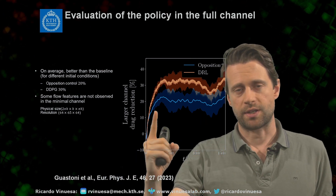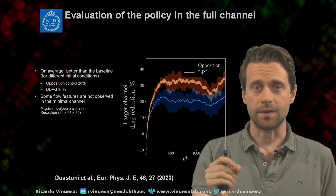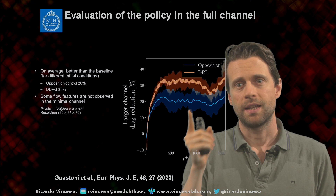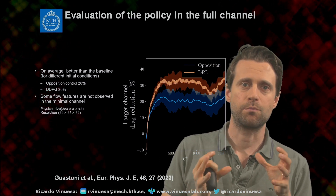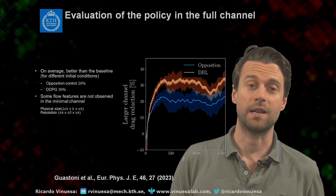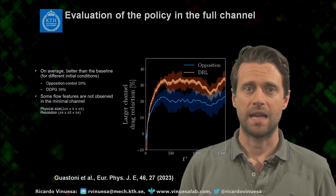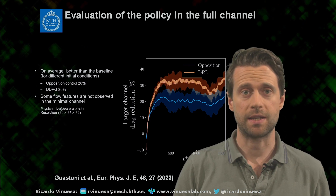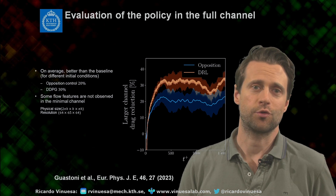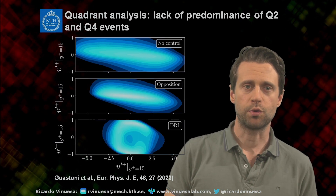We take the policy from the simplified minimal channel and apply it to a fully turbulent flow where the domain is large enough to capture all the streaks — the dynamics is no longer simplified. Again, blue shows opposition control drag reduction and orange shows reinforcement learning. Opposition control gives around 20% drag reduction, while deep reinforcement learning reaches 30% drag reduction. These are very promising results with high potential for application to more complex cases, more difficult geometries, and for understanding the underlying physics.